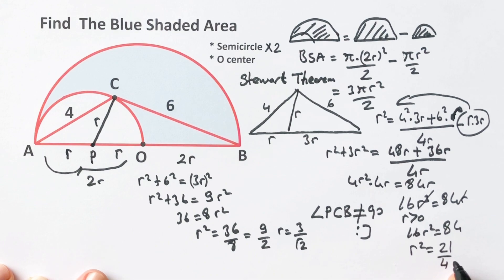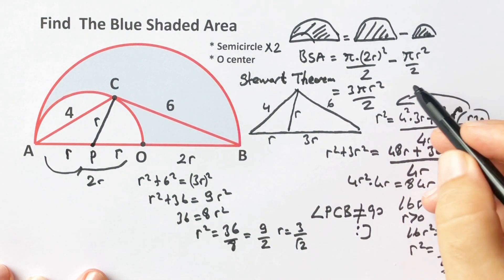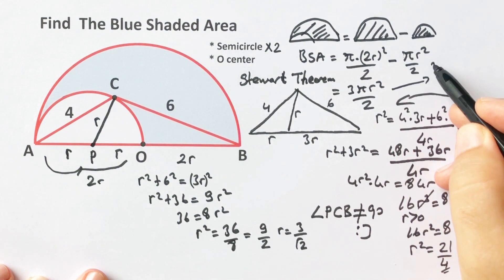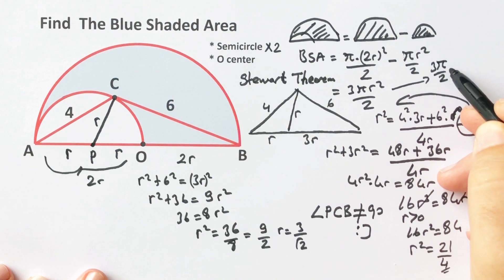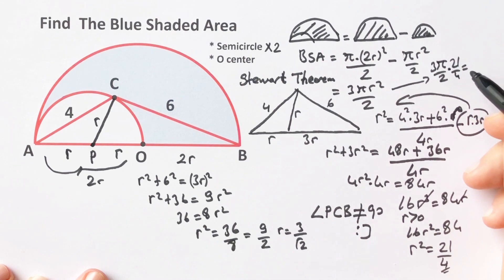Okay, now let's plug in this value to the formula. 3π over 2 times r² equals 3π over 2 times 21 over 4.